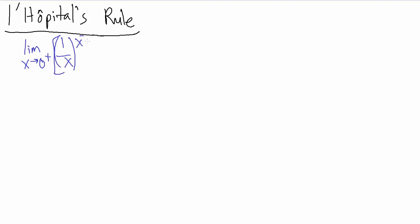This whole thing is inside the limit. The first thing we always want to do is try direct substitution. When we do that, we look at 1 over x. As x goes to 0 from the positive side, 1 over x goes to 1 over 0 from the positive side, which goes to positive infinity.